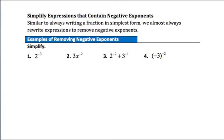Example 1: simplify 2 to the negative third power. First, get rid of the negative exponent by writing the reciprocal: 1 over 2 to the third power. Now evaluate 2 to the third power, which gives 8. So the expression simplifies to 1 eighth.